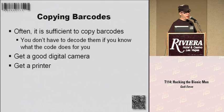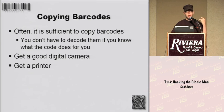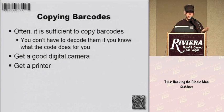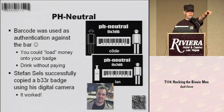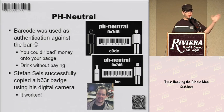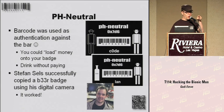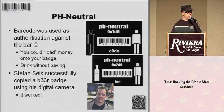The easiest hack with barcodes is, in most cases, just copying them. If the barcode already transports the information you want, get a good camera and a printer, make a picture, print it out, and use that copy. This happened at PH Neutral, where they have special alcoholic badges you can get free beer with. This guy didn't want to pay for beer, so he took a picture of someone's free-beer badge, went to the copy shop, got it printed and laminated, and got free beer. Which is why we now have chip cards.